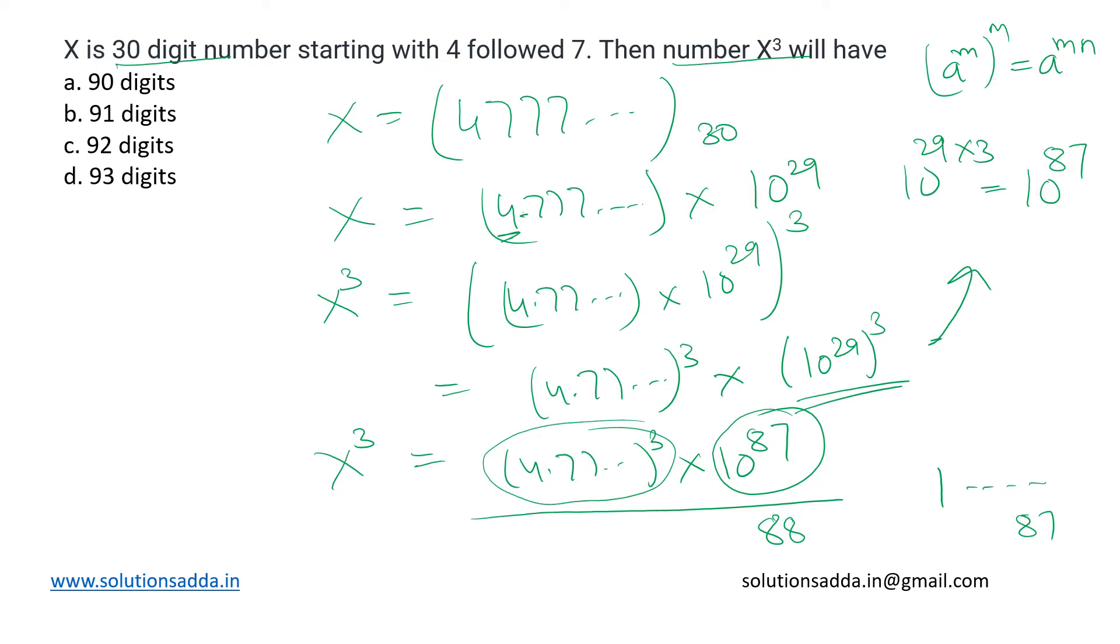We know that 4³ is 64, which means two digits, and 5³ is 125, which is three digits. So this number lies in the middle of them, so we'll assume that its cube will also have three digits.